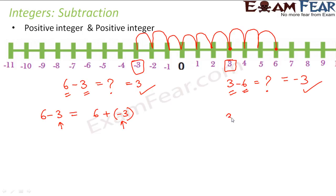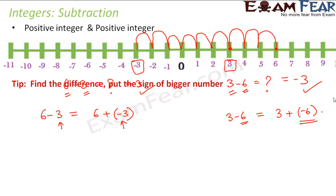In this case, 3 minus 6 is the same as 3 plus minus 6. So for all of whatever we learnt, the tip is: find the difference and put the sign of the bigger number. This rule remains the same as it was for addition in the case of a positive and a negative integer, because subtraction of two positive integers actually means addition of one positive and one negative integer.